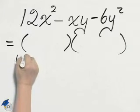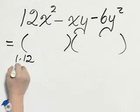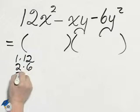12 has a lot of choices. 1 and 12, 2 times 6, 3 times 4.